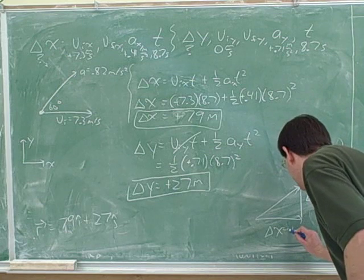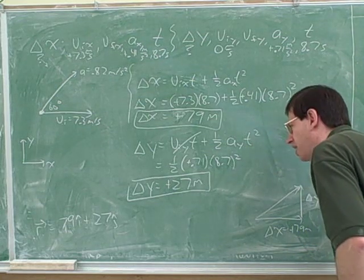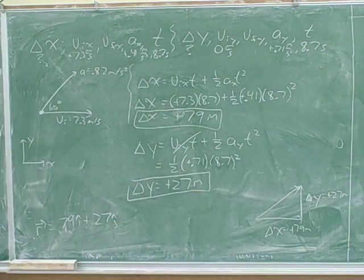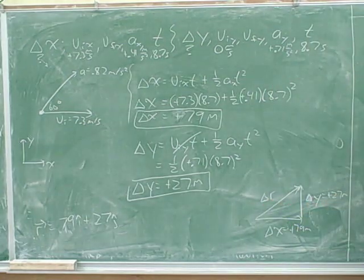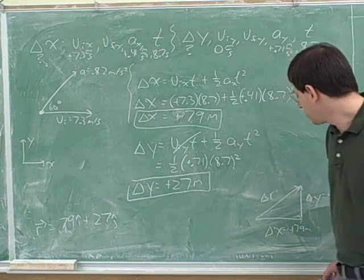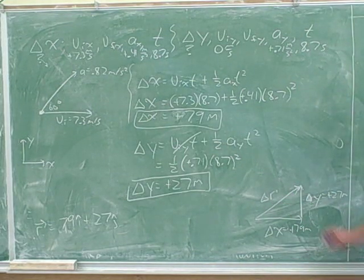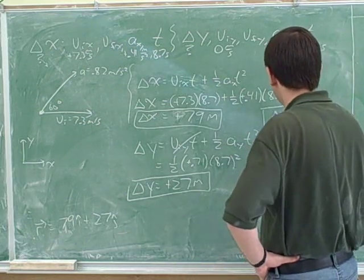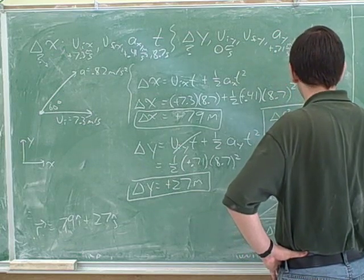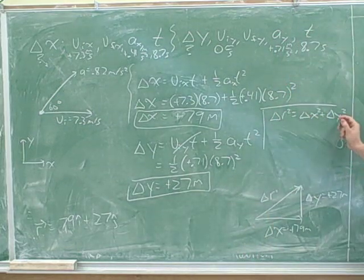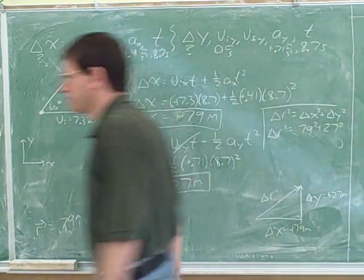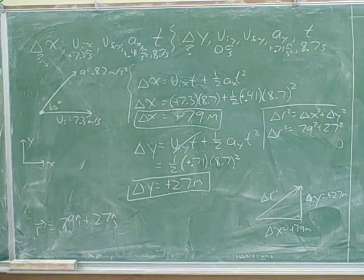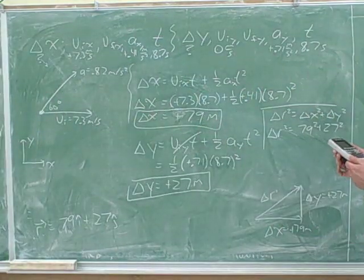We know that delta x is positive 79 meters and delta y is positive 27 meters. This side is delta r — the change in overall position. To find the magnitude of delta r, we use the Pythagorean theorem: the hypotenuse squared equals the x component squared plus the y component squared. With x = 79 and y = 27, we calculate delta r squared equals 6970, so r is the square root of 6970, which gives approximately 83.5.